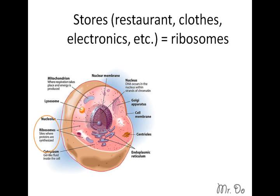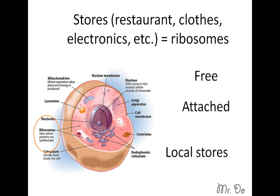Next we have ribosomes — they're tiny little dots that float around. In the city, they're equivalent to stores, like a restaurant or clothes store, that facilitate the city's survival. The ribosome makes sure you get your food and stuff. There are two types: the free type that just floats around, equivalent to your local stores.